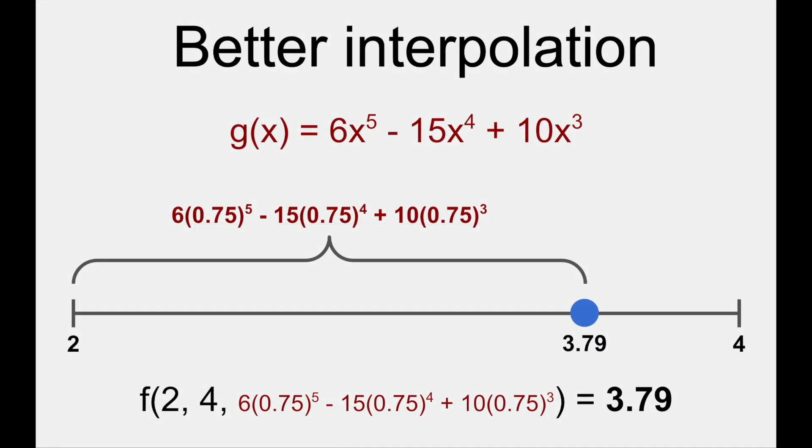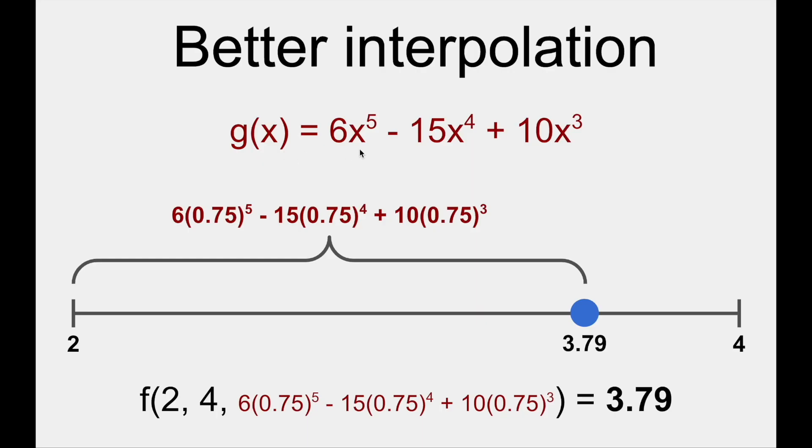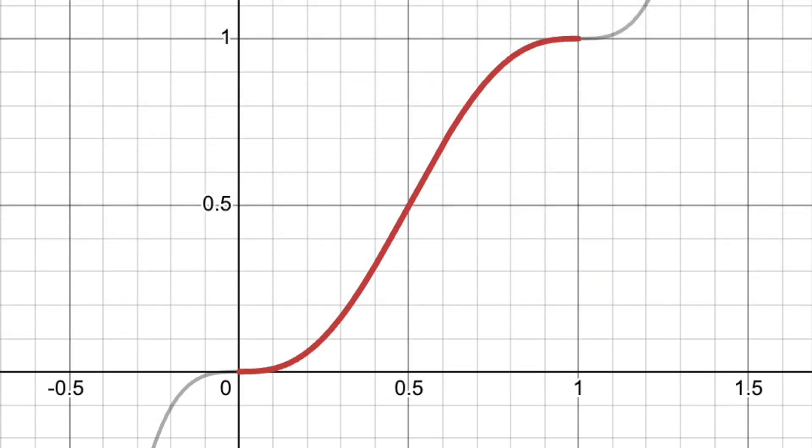Now, what happens if we apply a function to t before using it in the linear interpolation? Take the function f of x equals 6x to the 5th minus 15x to the 4th plus 10x cubed. The very important thing to note here is that when a value from 0 to 1 is the input, a value from 0 to 1 is always the output, but the function is smoother than the line from earlier. That is why this function is the standard for Perlin noise.